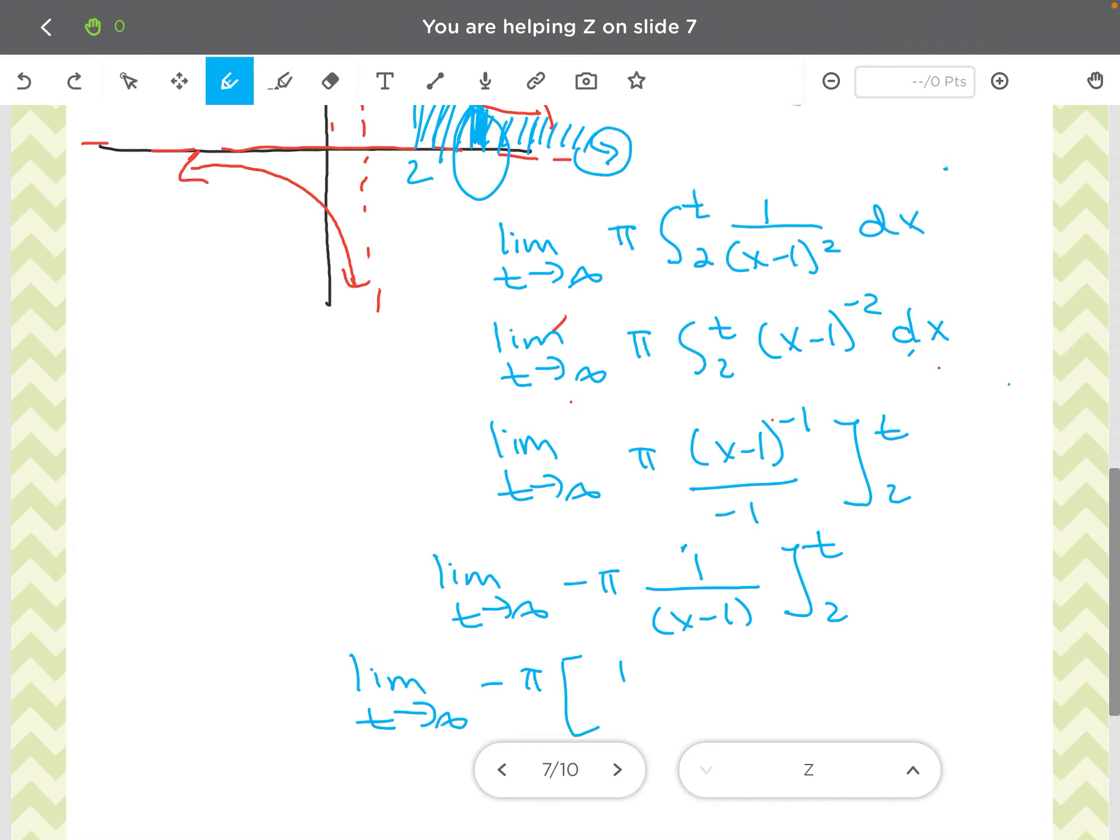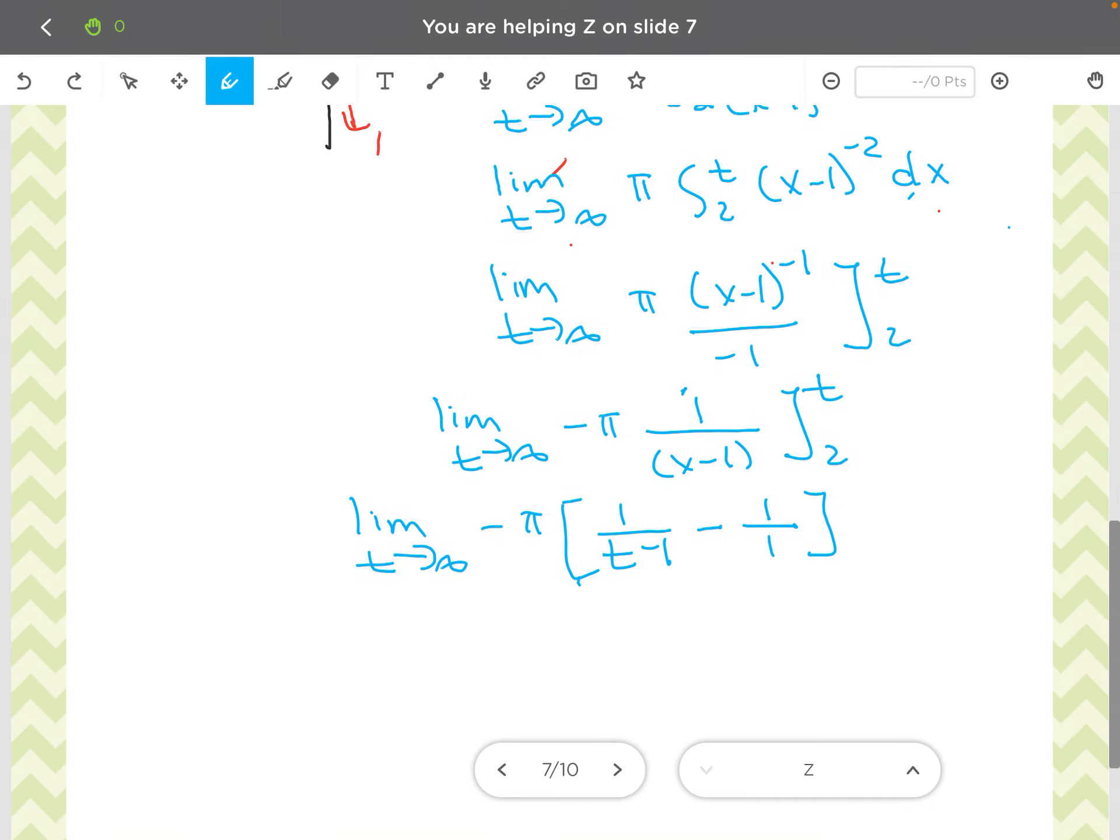So I have negative pi here. 1 over t minus 1 minus 1 over 2 minus 1 is 1. And let's take the limit now.